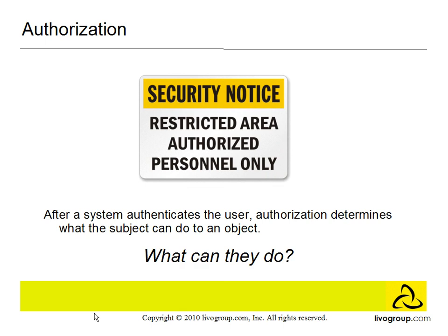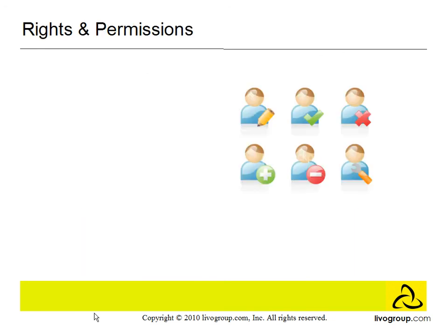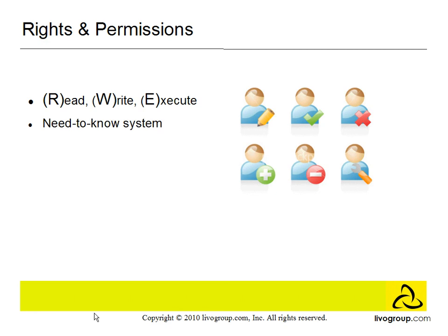Most modern operating systems define sets of permissions of three basic types of access: read, write, and execute. For the read access, the subject can read the contents of the file. For the write access, the subject can change the contents of a file — they can add, create, delete, or rename the file. For the execute access, the subject can cause the program to run. Authorization can also be based on the need-to-know system, which ensures that only authorized individuals gain access to information necessary to do their jobs. So if your job requires access to secret information, then you would need a secret security clearance.